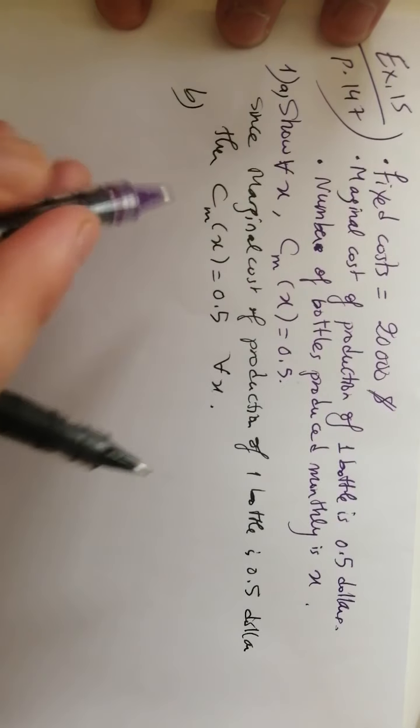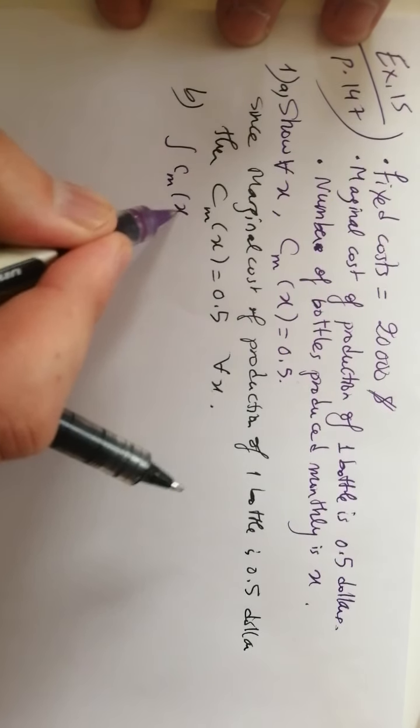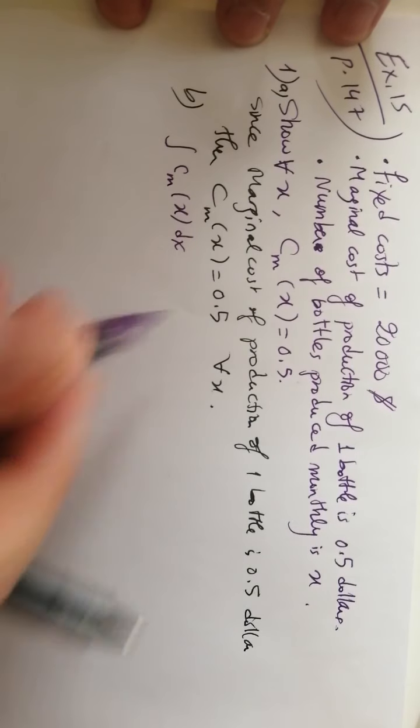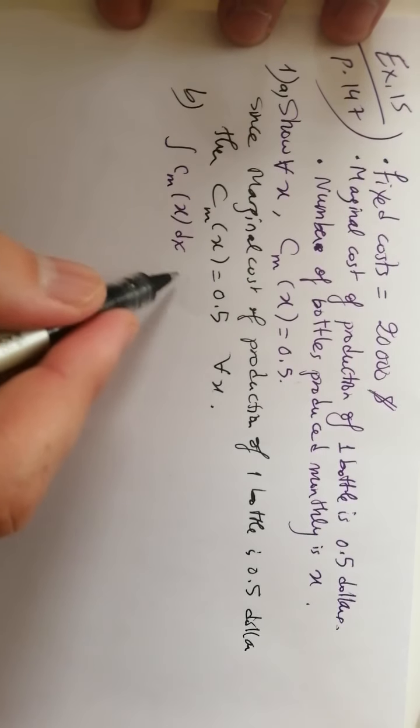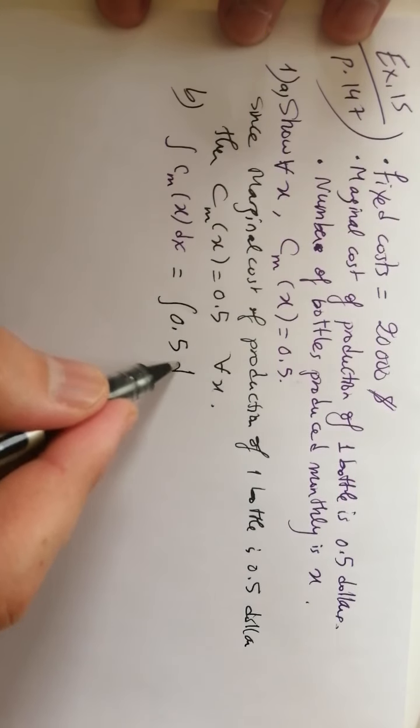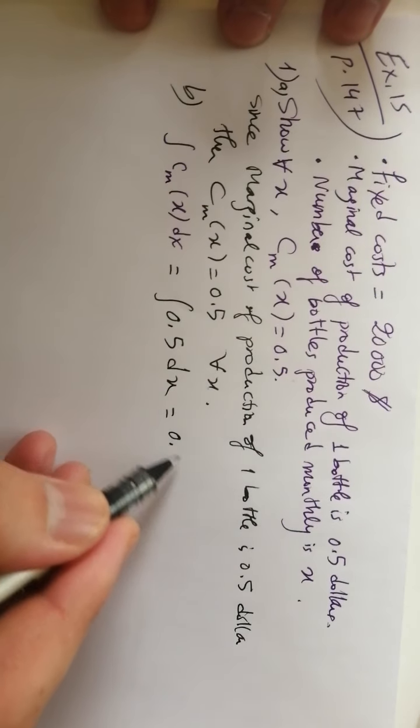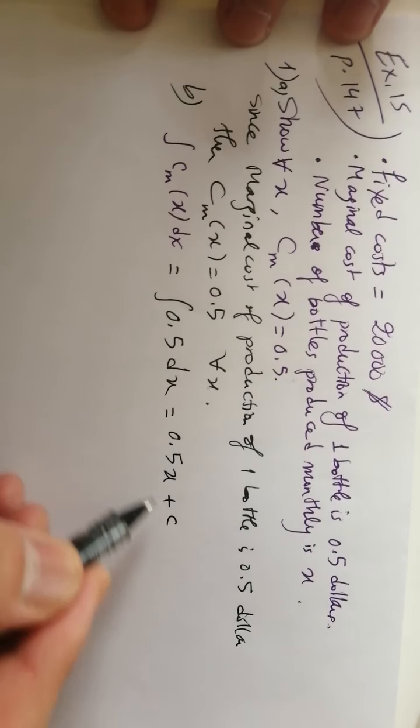Part B: Calculate the antiderivative of CM. The antiderivative of CM of x dx is straightforward. The integral of 0.5 dx equals 0.5x plus C, where C is a constant.